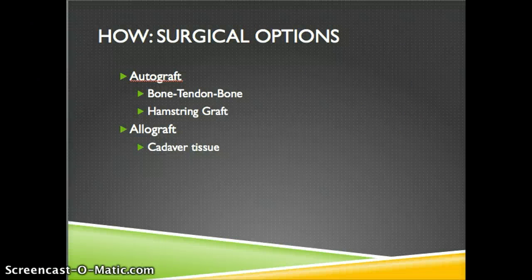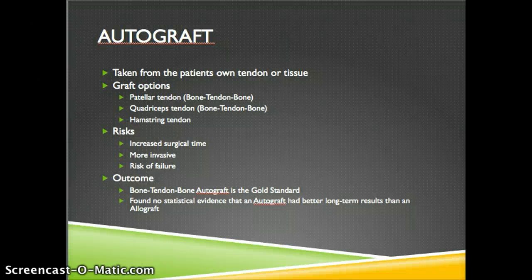Surgical options for restoring or repairing an ACL are autograft — which includes bone-tendon-bone and hamstring grafts — or allograft, which uses cadaver tissue. An autograft is a graft taken from the patient's own tendon or tissue; options include a patellar tendon and quadriceps tendon, both bone-tendon-bone grafts, and hamstring tendon, a soft tissue graft. Risks of autograft include increased surgical time, a more invasive procedure requiring an additional incision, and risk of failure. The bone-tendon-bone graft is the gold standard; however, no statistical evidence shows that autograft has better long-term results than allograft.